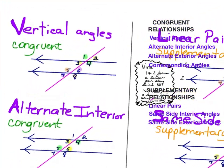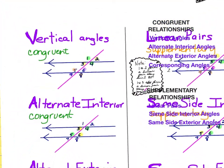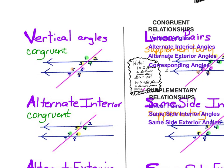Vertical angles are angles that are opposite or diagonal from each other. They're not touching and they're in the same grouping of four angles that have been created. For example, one and four are vertical, and two and three are vertical. Then in the bottom set of four angles, we have the same thing — five and eight, and then six and seven.